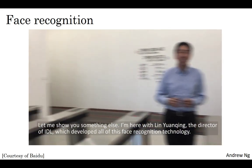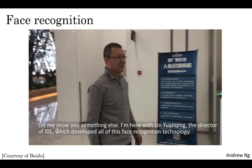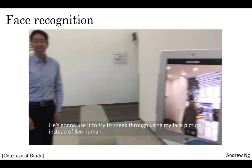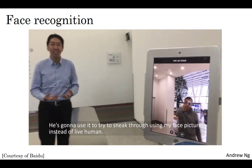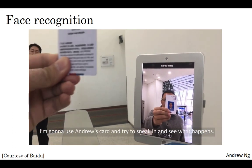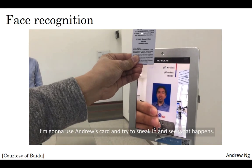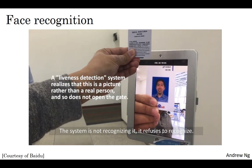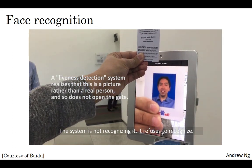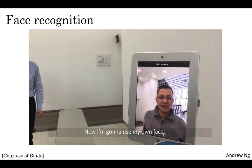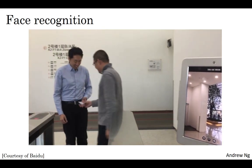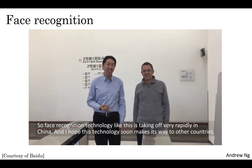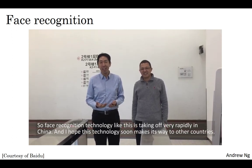Let me show you something else. I'm actually here with Lin Yanqing, the director of a live video team which has built all of this face recognition technology. I'm going to hand him my RFID card, which has my face printed on it, and he's going to use it to try to sneak through using my picture instead of a live human. I'm going to use Andrew's card and try to sneak in and see what happens. The system is not recognizing — it refuses to recognize. Now I'm going to use my own face. Face recognition technology like this is taking off very rapidly in China, and I hope that this technology soon makes its way to other countries.